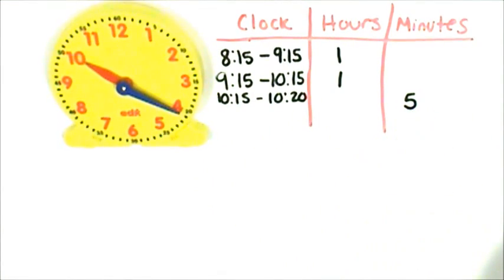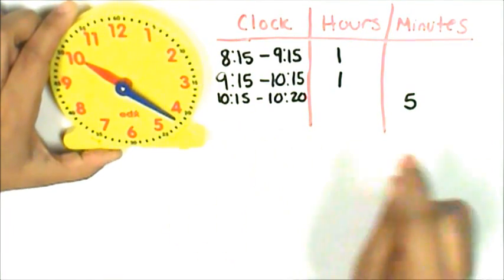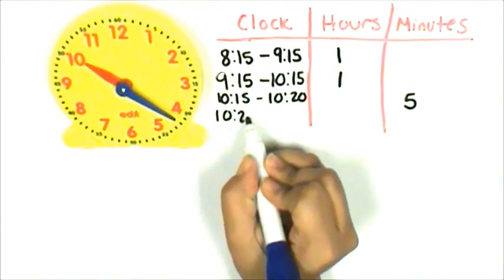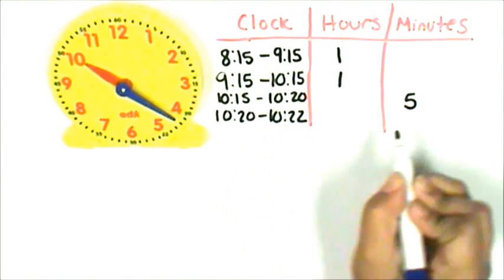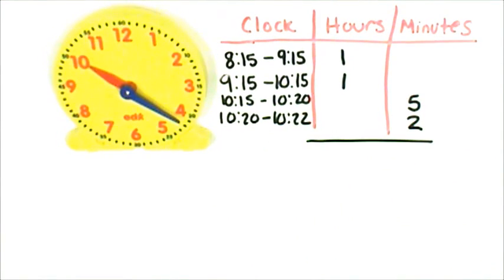But we're not finished yet. 10:20, 10:21, 10:22. From 10:20 to 10:22 that was two minutes. Let's look at the table to see how long Amy's practice was.